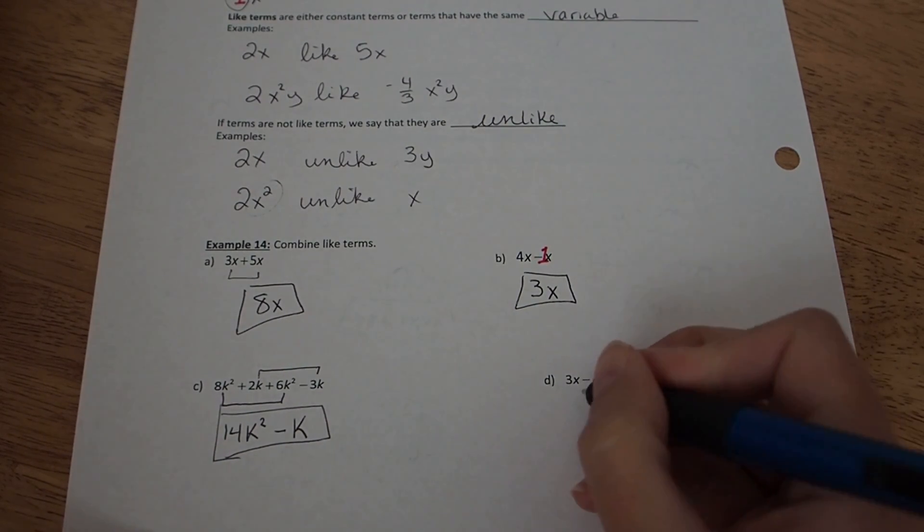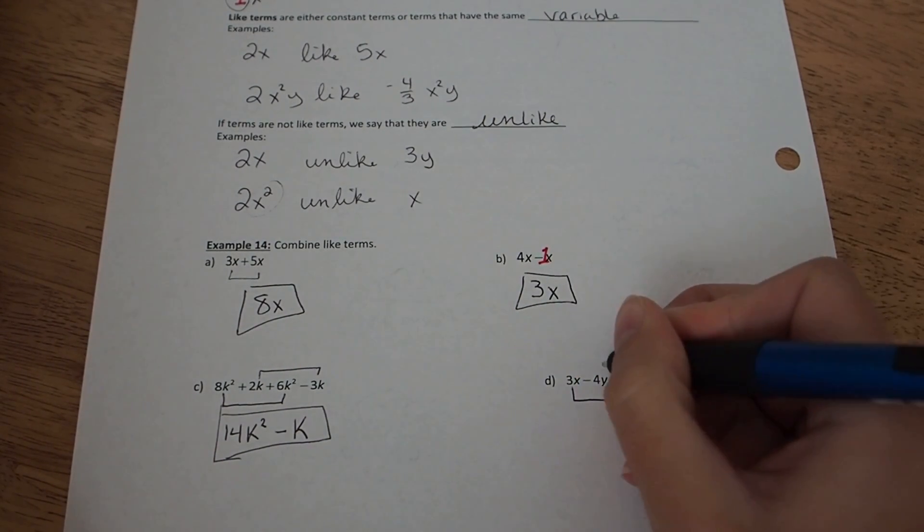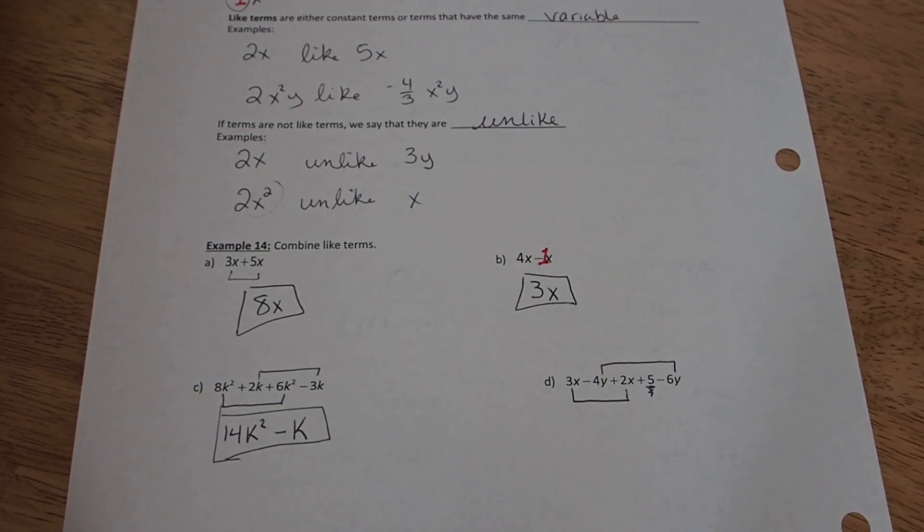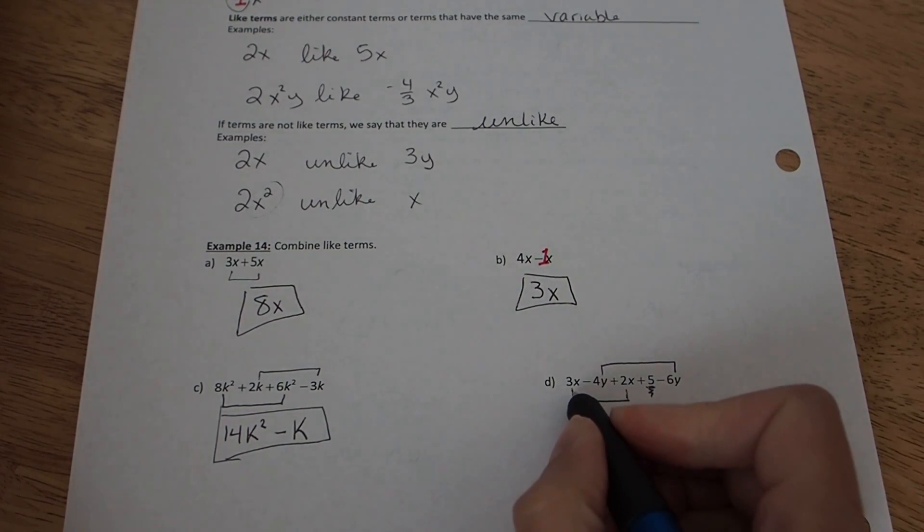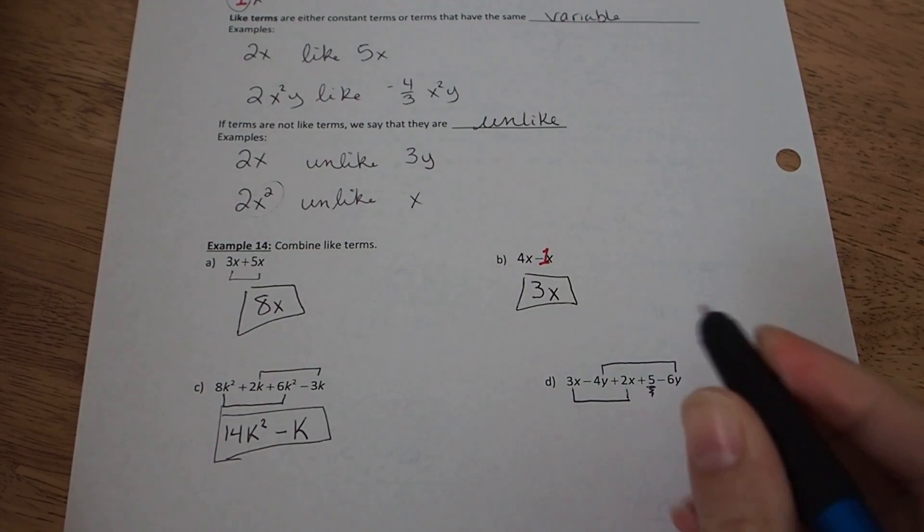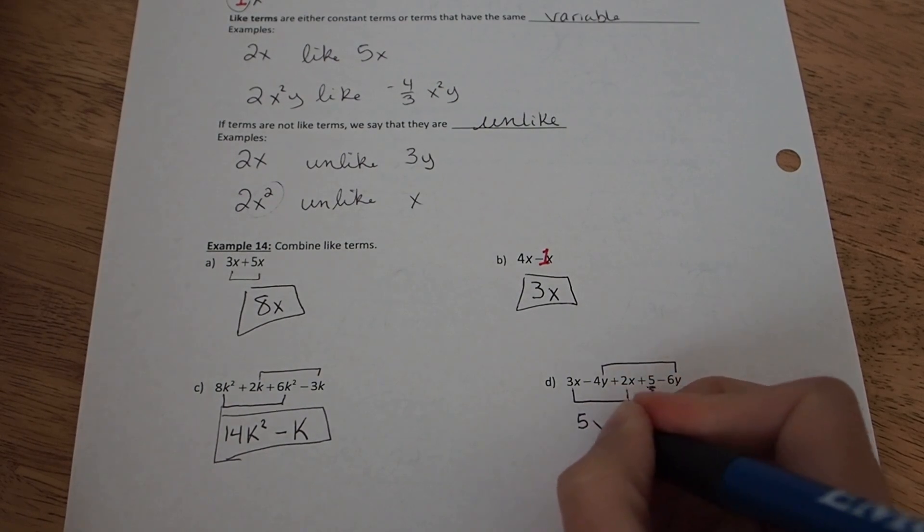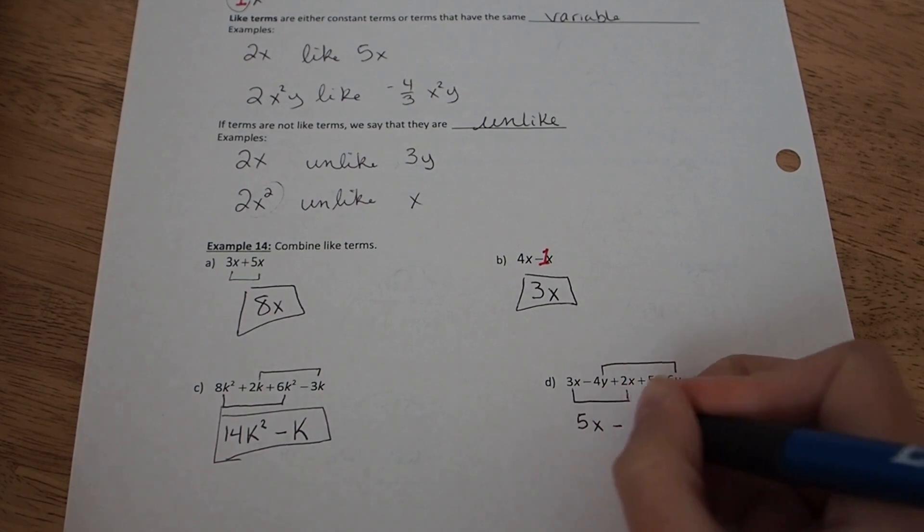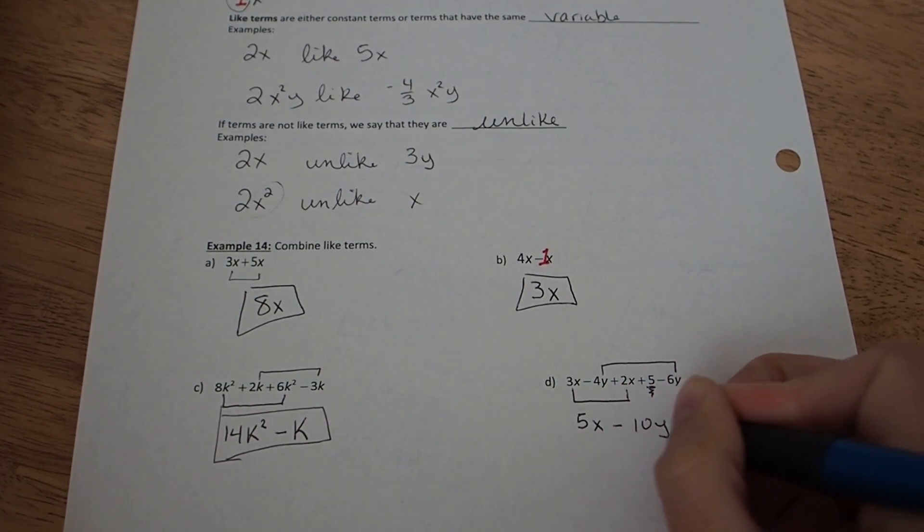And part d, I have a few x terms, I have a few y terms, and then this 5 is going to be all alone, so they don't have any constant terms to add to it. So first the x term, 3x plus 2x will be 5x. Negative 4y minus 6y, they're going to add up to negative 10y. And last I have the plus 5.